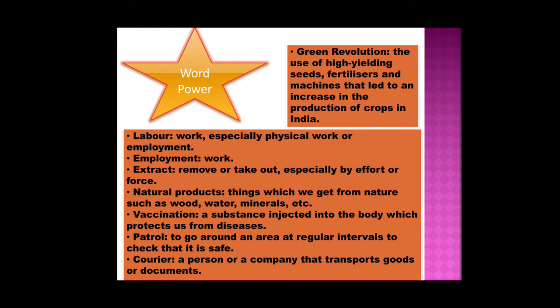Let's go through the difficult words from the chapter. Green Revolution: the use of high-yielding seeds (HYS), fertilizers and machines that led to an increase in the production of crops in India. Labor: work, especially physical work or employment. Employment: work. Extract: to remove or take out, especially by effort or force. Natural products: things which we get from nature such as wood, water, minerals, etc. Vaccination: a substance injected into the body which protects us from diseases. Patrol: to go around an area at regular intervals to check that it is safe. Courier: a person or a company that transports goods or documents.